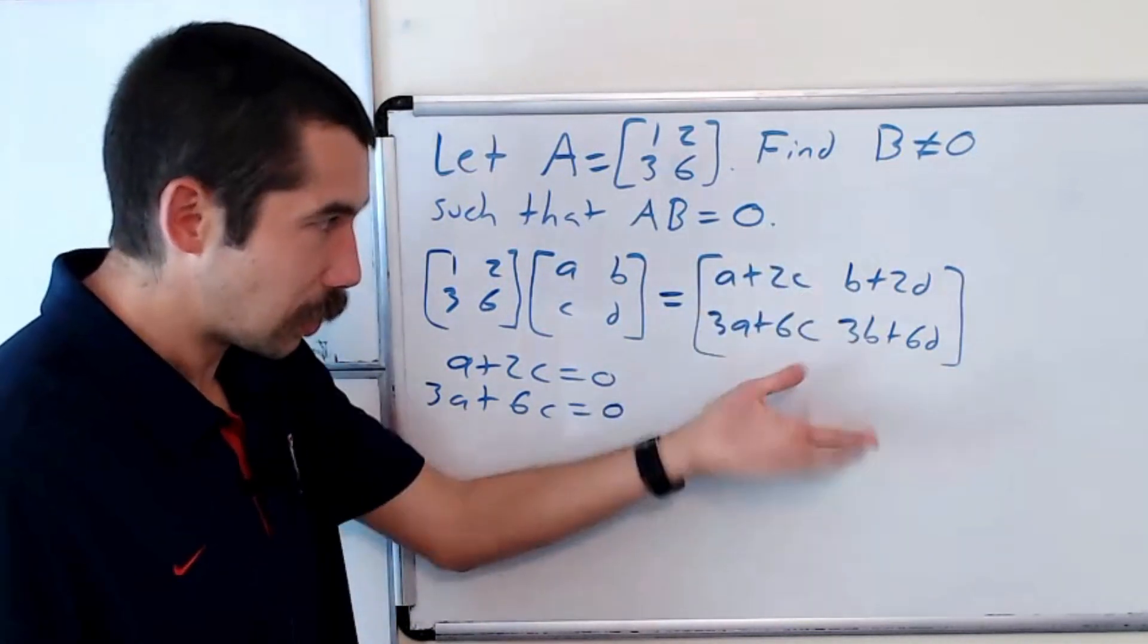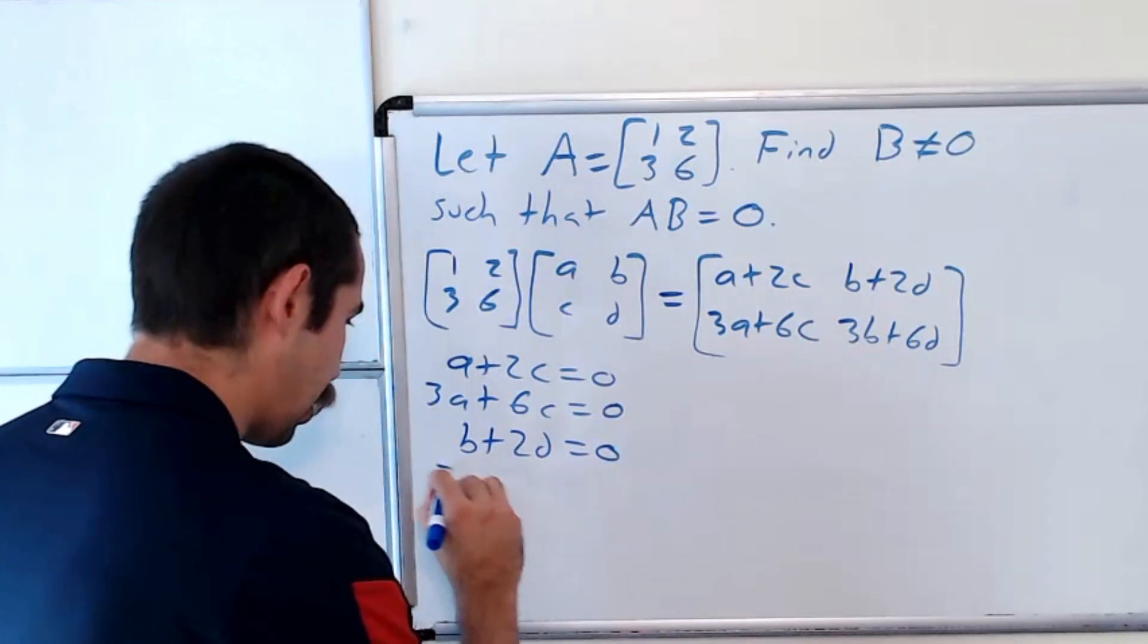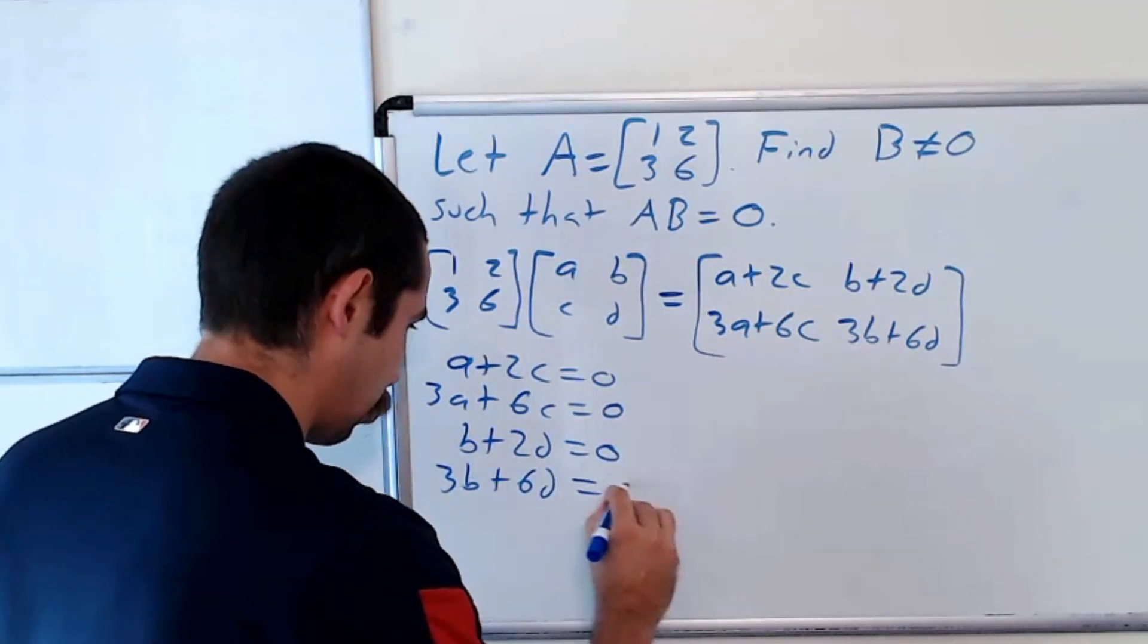And the other two have to be 0. So b plus 2d is equal to 0, and 3b plus 6d is equal to 0.